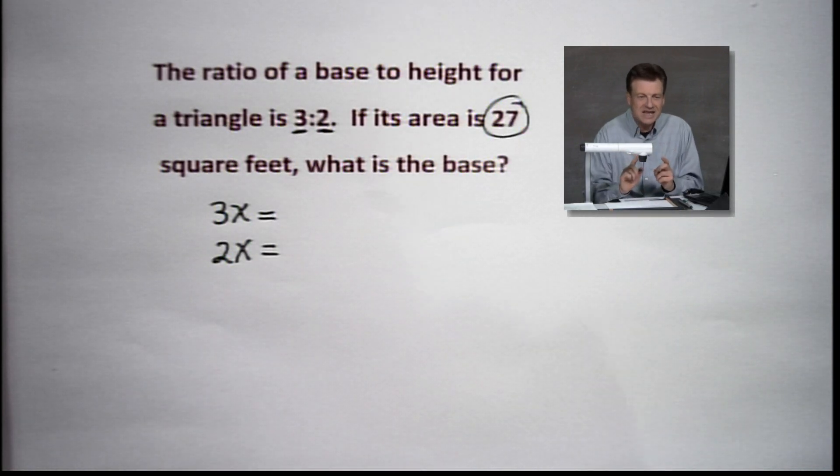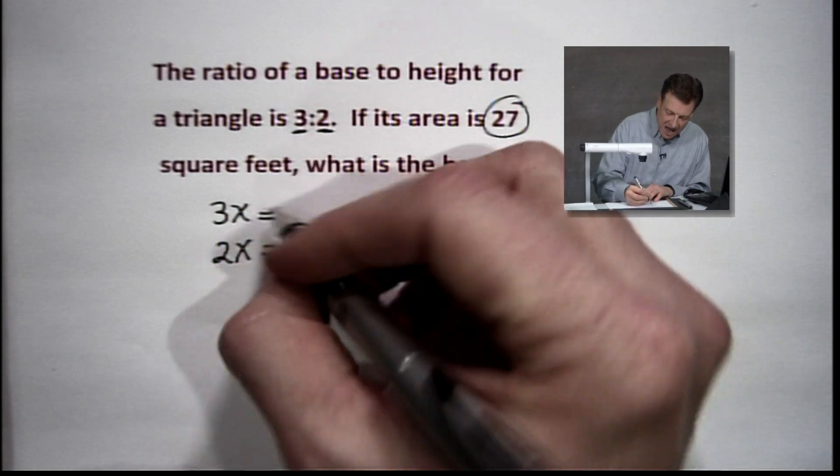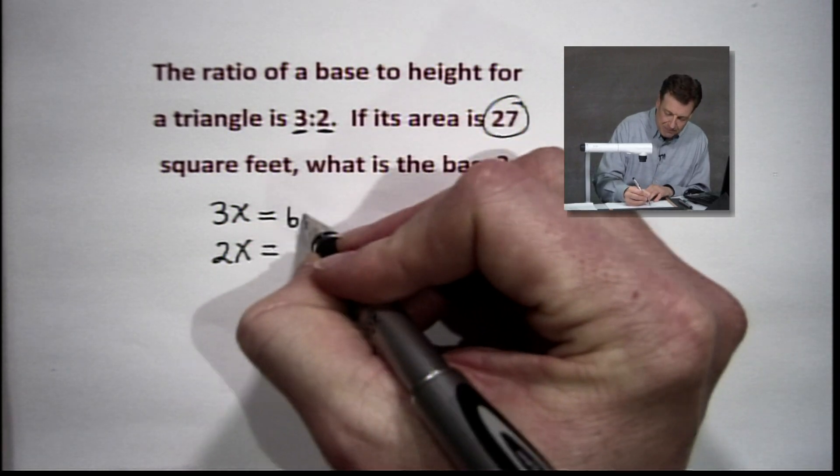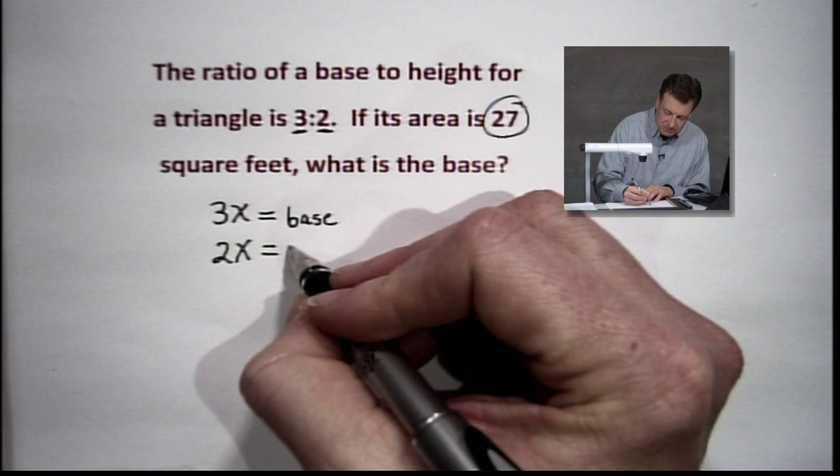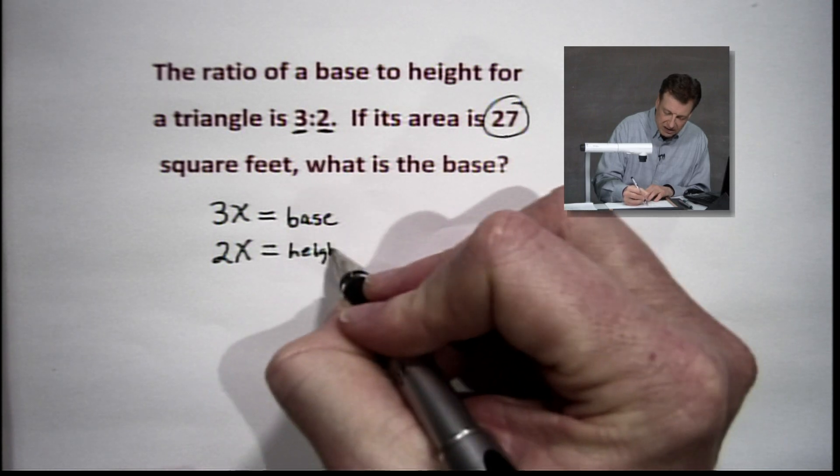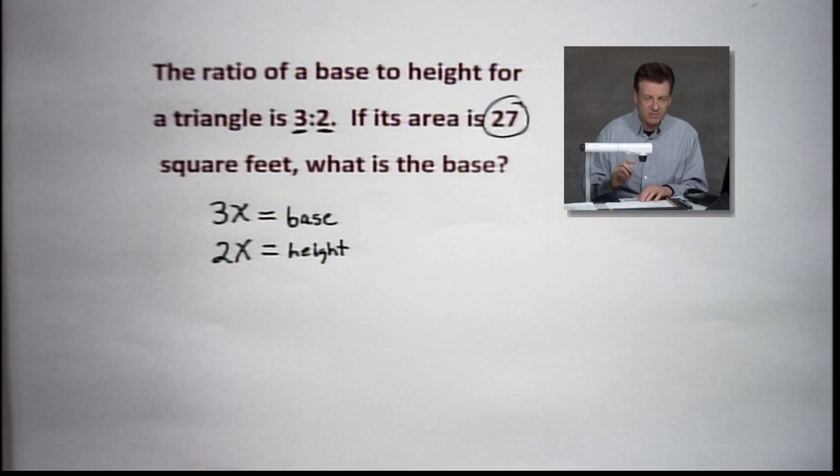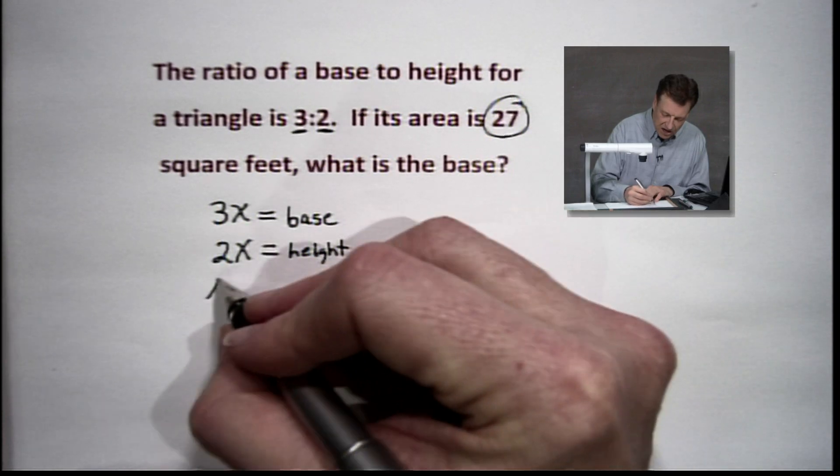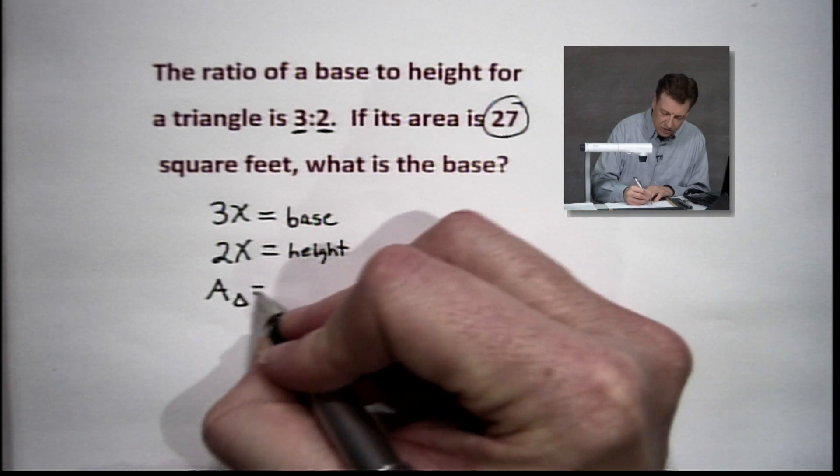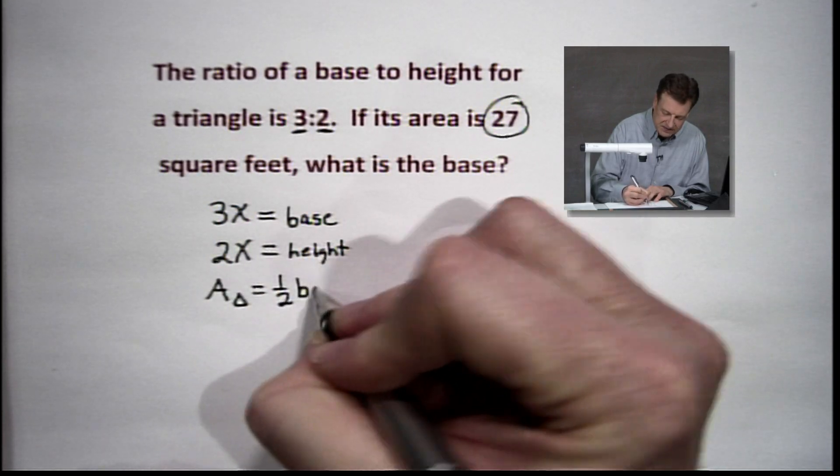So let's take it and see what the story is. Now, this is going to be our actual base. This will actually be our height. And you know there's a formula. It's called area of a triangle equals 1 half base times height.